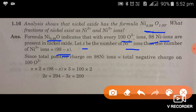Since the total positive charge on the 98 nickel ions should be equal to the negative charge on the 100 oxide ions, both charges should be equal and opposite so that the compound remains neutral.